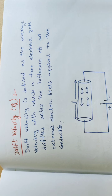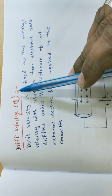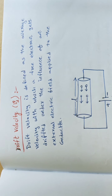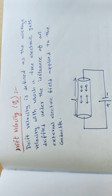Drift velocity is represented with Vd. Previously we have knowledge about general velocities and speeds. Velocity is the rate of change of displacement, and speed is the distance covered by a body in a certain interval of time.